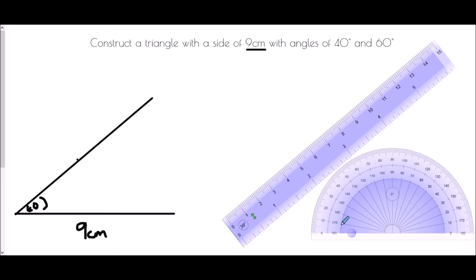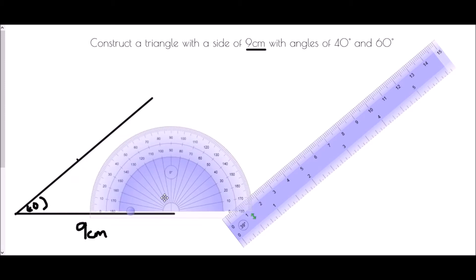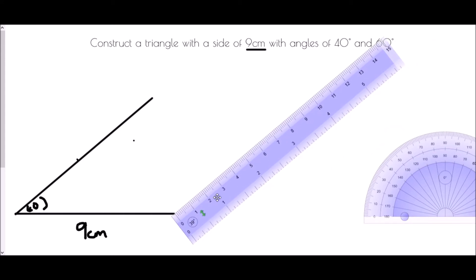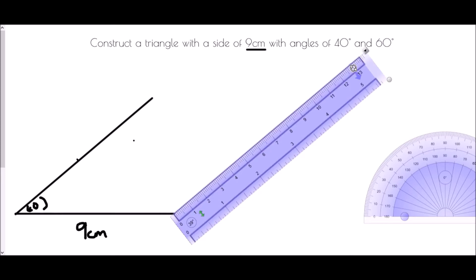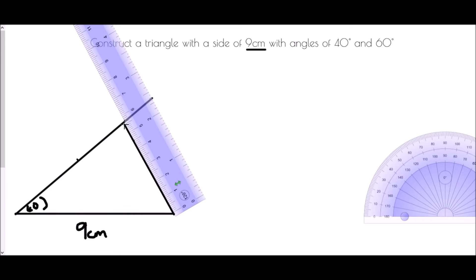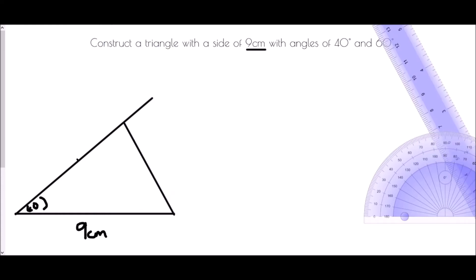In terms of the other angle, the 60 degrees should be drawn at the right hand side of the line — so 40 degrees at the left and then 60 degrees at the right. This time because zero is on the outside I'm going to use the outside numbers, and 60 is just here. I'm going to take my protractor away and line up my ruler, then draw a line from the end of my line through that point until it meets the other line we drew. That has created a triangle with all the key features — a 40 degree angle and a 60 degree angle with a side of 9 centimeters.